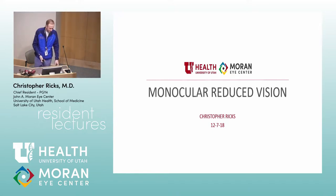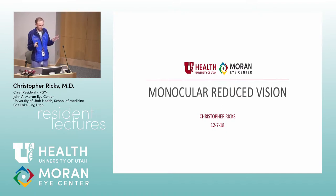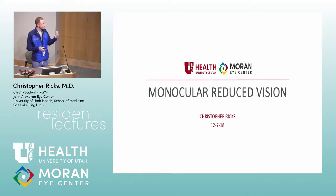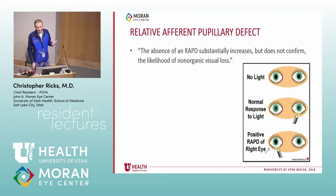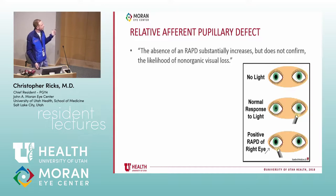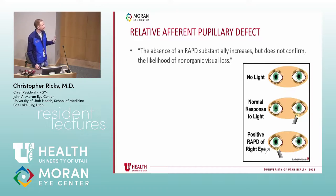The next section is monocular reduced vision, which is a little harder to tease out. There are two types: someone who says they can't see anything at all in one eye, and someone who says their vision is just decreased in one eye. No vision in one eye is a little easier to tease out versus just decreased vision. The first thing to look for when someone says they can't see out of one eye is an APD — its absence substantially increases, but does not confirm, the likelihood of non-organic vision loss.